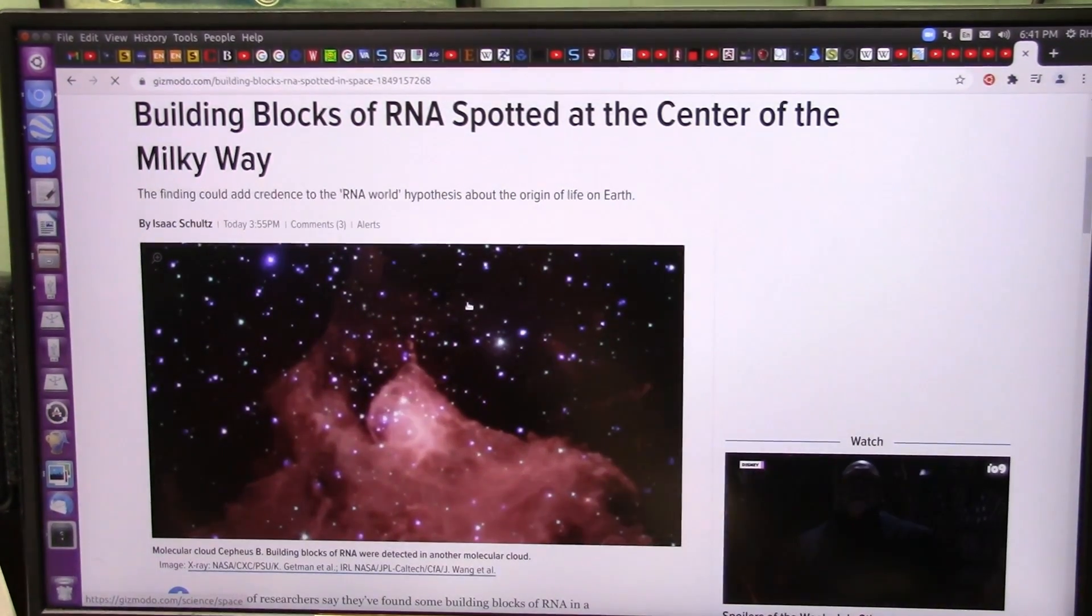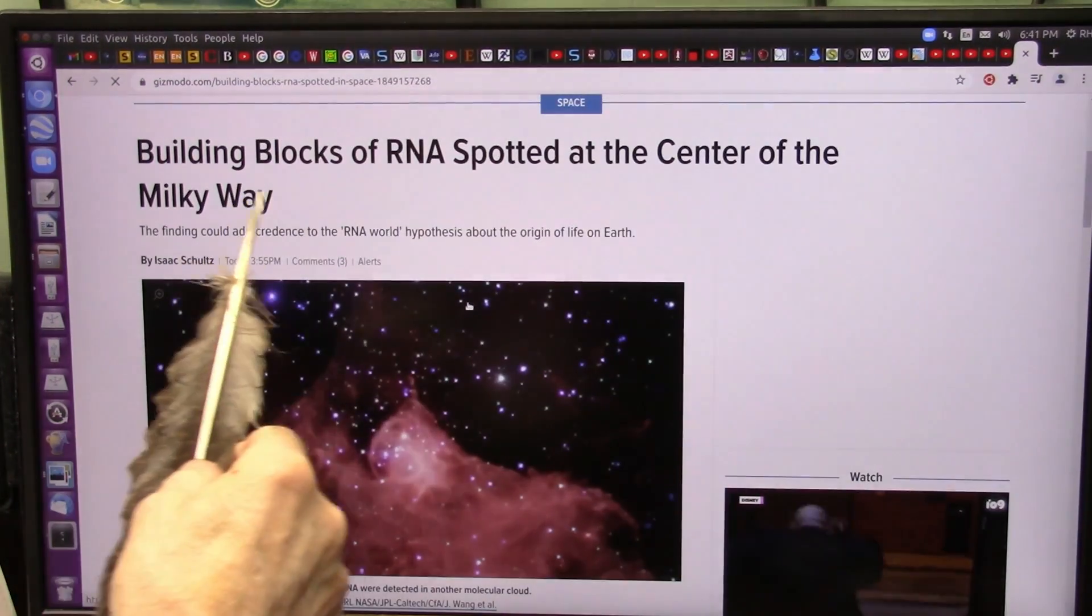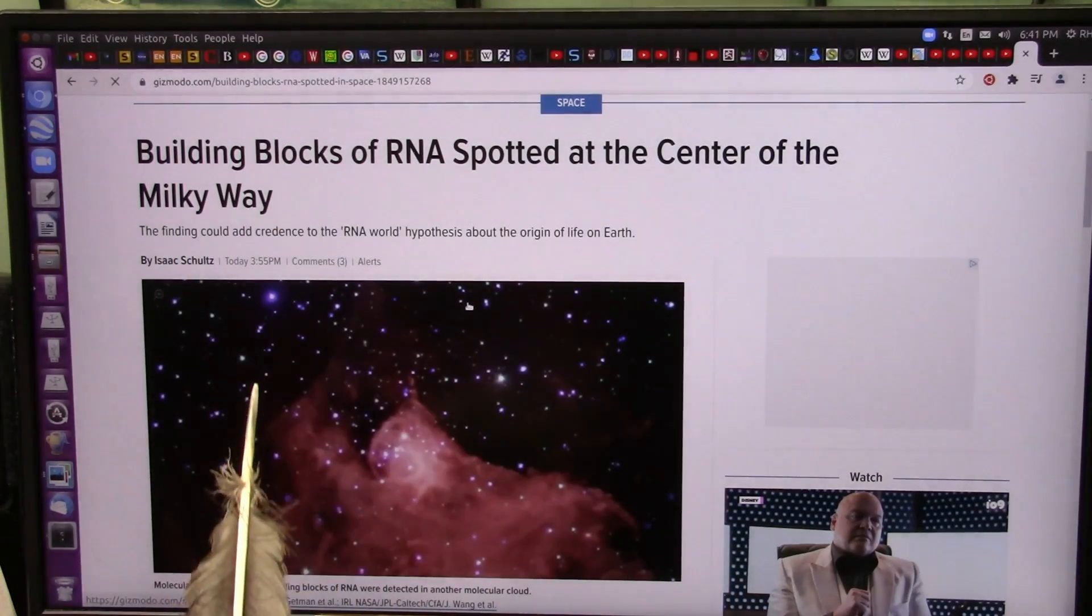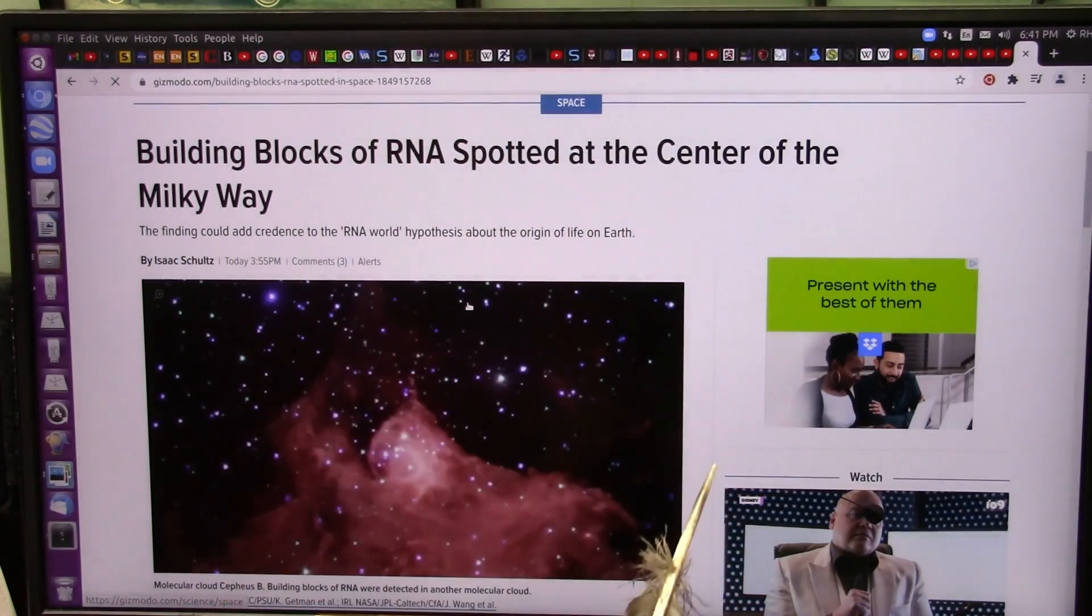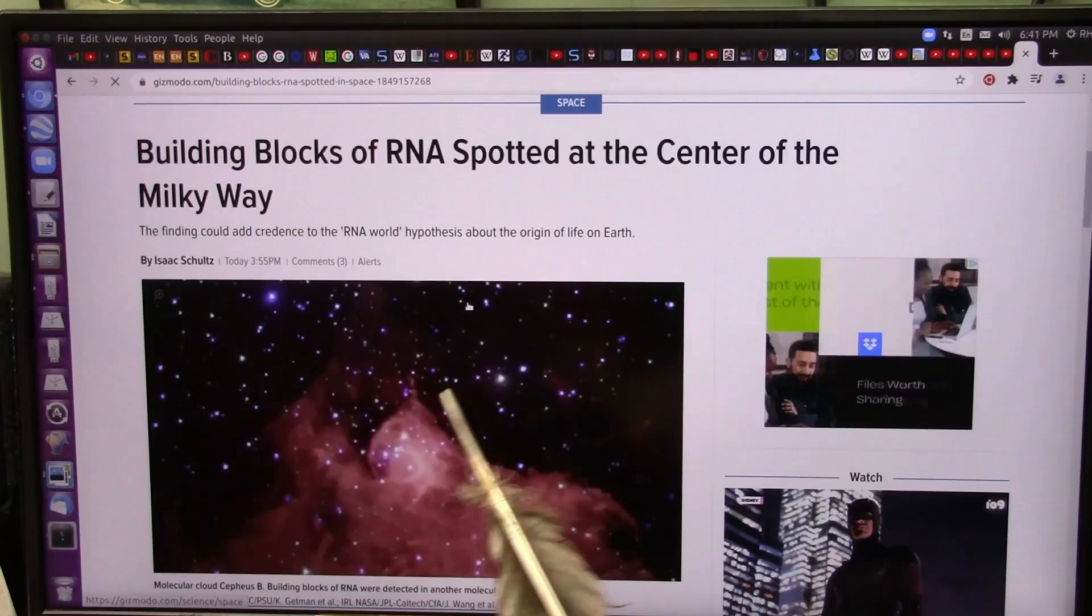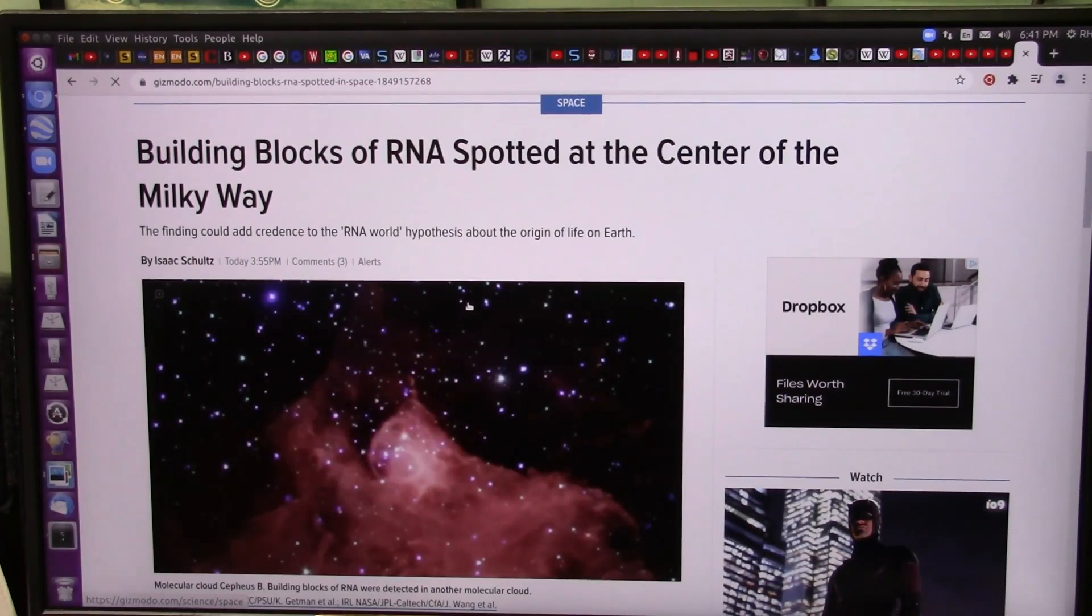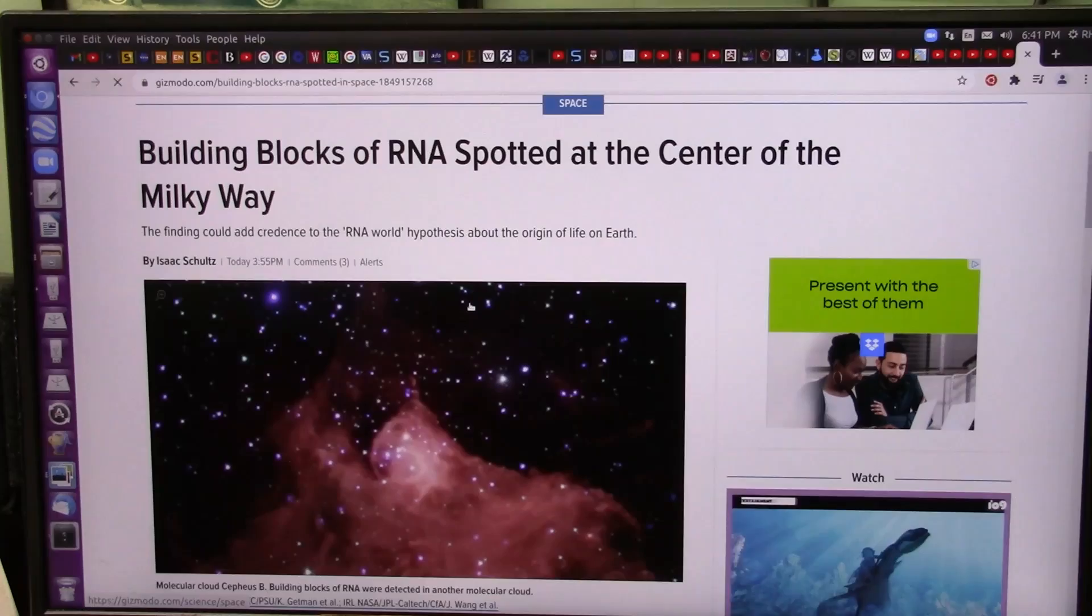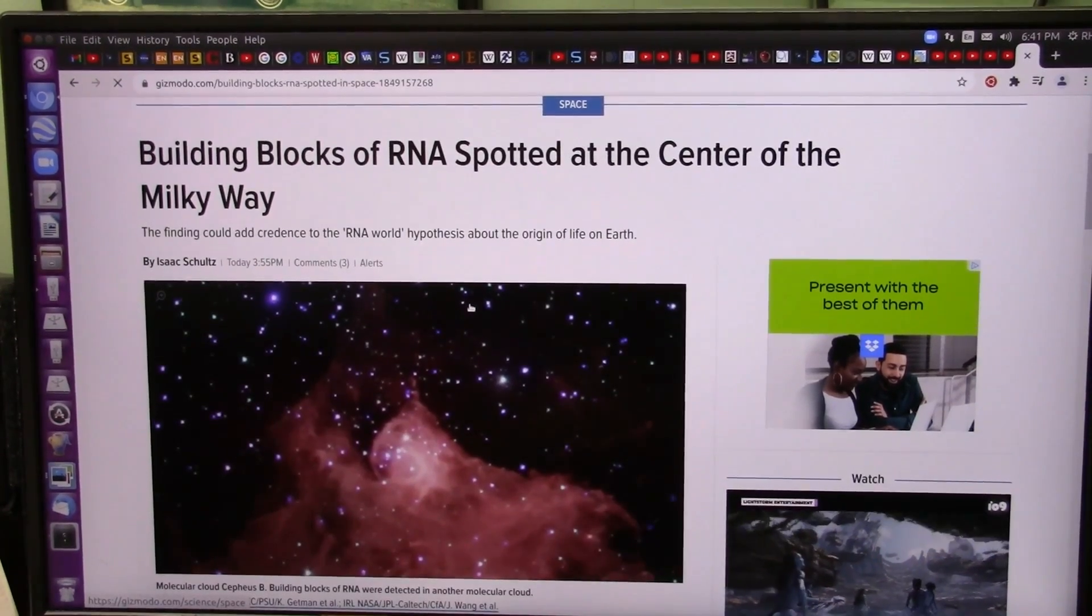Gizmodo just reported building blocks of RNA spotted at the center of the Milky Way. Well, DNA forms in space all by itself if there's ionized particles, which space is filled with. Let's take a look at this.